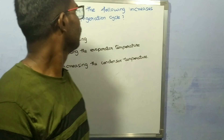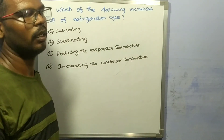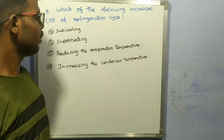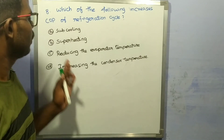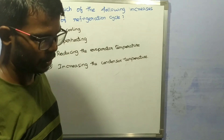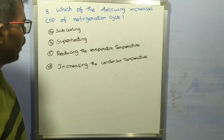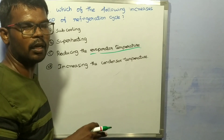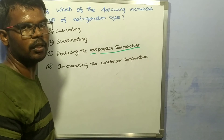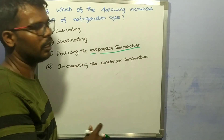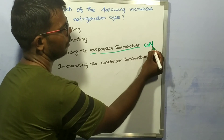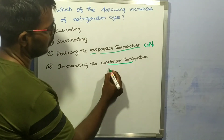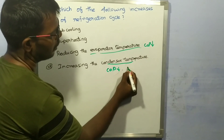Eighth question: which of the following increases the COP of a refrigeration cycle? Options are: A) subcooling, B) superheating, C) reducing the evaporator temperature, D) increasing the condenser temperature. Reducing the evaporator temperature also reduces the refrigeration effect, so COP decreases. Increasing the condenser temperature increases compressor work, so COP decreases.